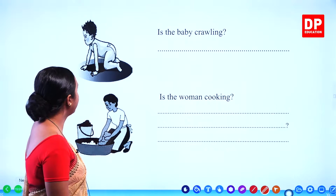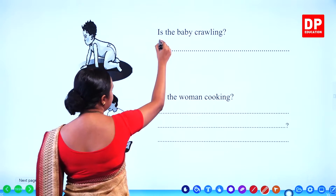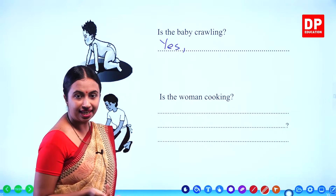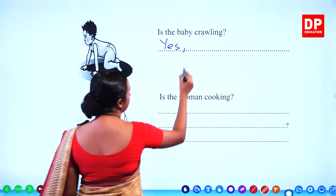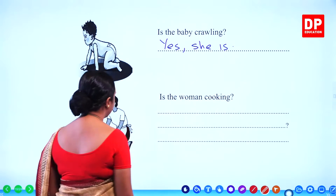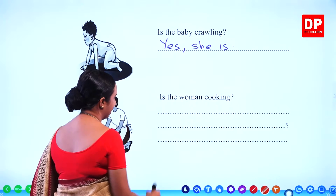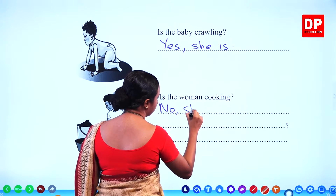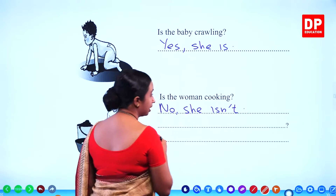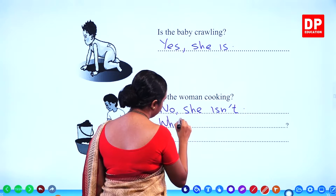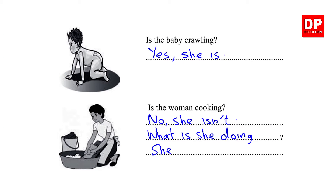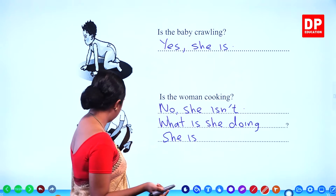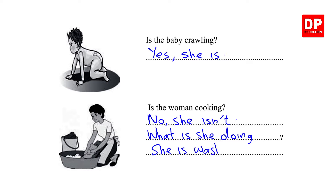Is the baby crawling? Yes, she is. Is the woman cooking? No, she isn't. Then, what is she doing? She is washing the clothes.